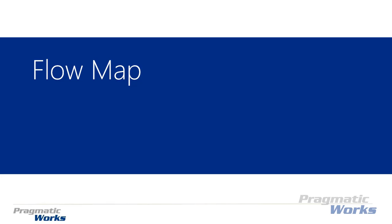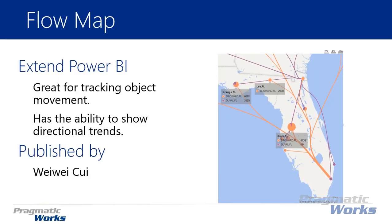Welcome back to the Power BI custom visuals course. In this module we'll be looking at the flow map. The flow map is really great for tracking object movement. As you can see in the screenshot on the right hand side, we're seeing movement between multiple counties within the state of Florida. We'll be looking at a fairly similar example — the migration of individuals from different counties within Florida. It has the ability to show directional trends really well.